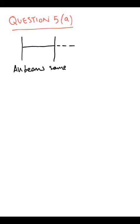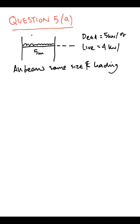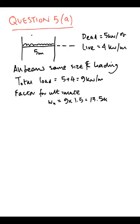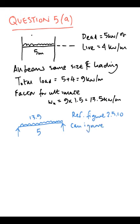Now all the beams are the same size and loading. Traditionally, we would design the beams for the ultimate dead and live load condition, assuming they're simply supported. So we take the total load which comes up at 9 kN/m, ultimate factor 1.5 gives you 13.5 kN/m.